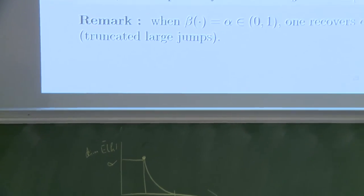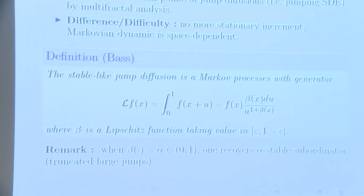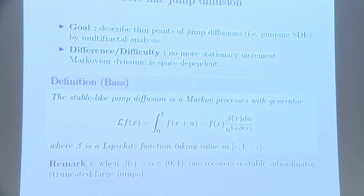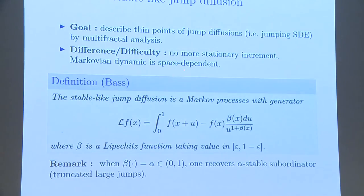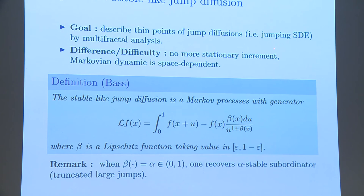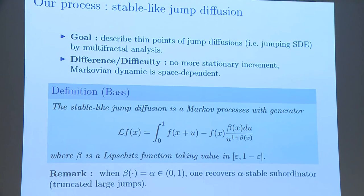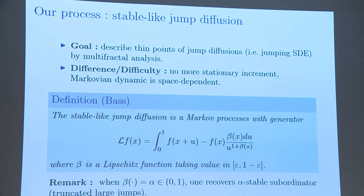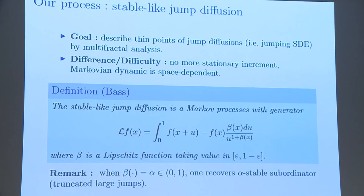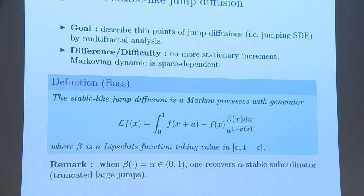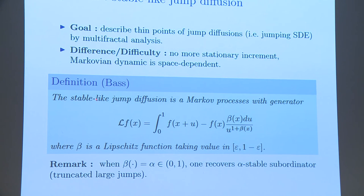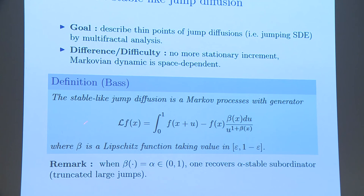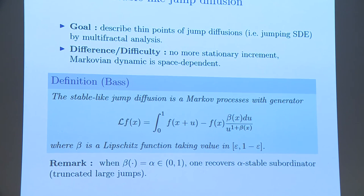With all this in mind, let us just give a few words on the process I studied. The goal is to describe the thin points of the jump diffusions, jumping SDEs, by using the notions of multifractal analysis. The kind of difficulty or difference is that for this kind of more general Markov process, we don't have stationary increment. This is the difference between the process I studied and that of Hu and Taylor. The definition of this kind of process given by Bass. Bass introduced this in late 80s.